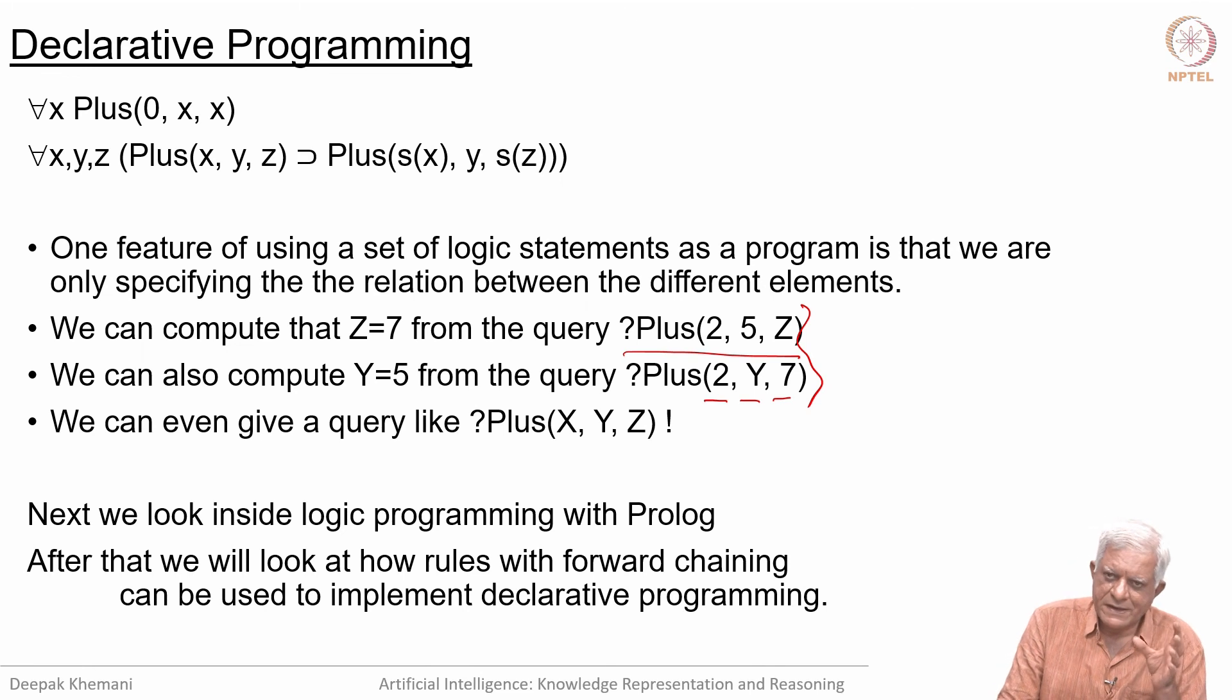We will look at logic programming in a little bit more detail next, and after we are done with that, we will come back and look at declarative programming from the perspective of forward chaining. By now I hope it is clear that logic programming is kind of closely tied up to backward chaining and, as you will see, it is also tied up to searching the goal tree in depth-first search fashion.